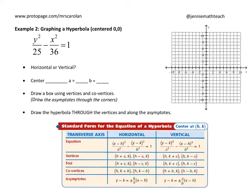The first thing we decide is whether this is horizontal or vertical. Since the y is first, this will be vertical. The center is whatever is subtracted from the x and the y — there aren't any numbers there, so our center is at (0, 0). Let's go ahead and plot that.